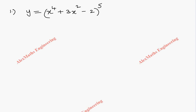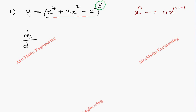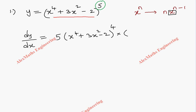Let's solve some problems based on the chain rule method. We have a function where the entire term inside is raised to the power 5. This inner term is the inner function and the power is the outer function. The differentiation of x^n gives n·x^(n-1), so applying this to the outer function: n is 5, the inner function stays as it is raised to the power (5-1) = 4, then we differentiate the inner function: 4x³ + 3x² differentiates to give terms with 6x, and the constant -2 differentiates to 0.